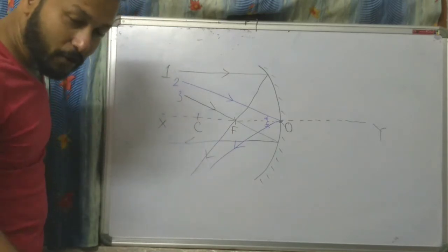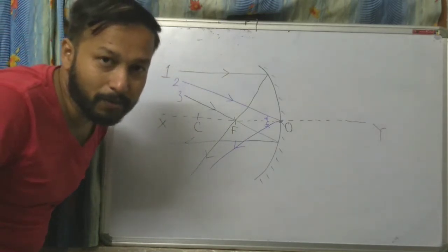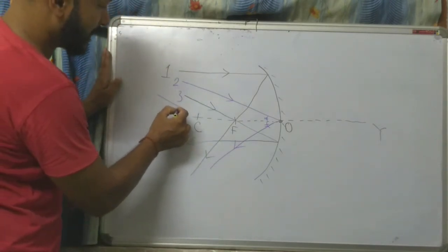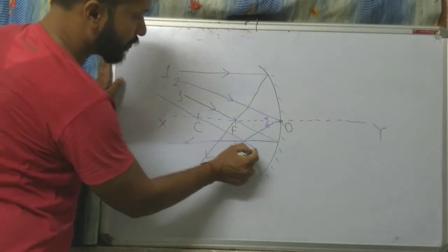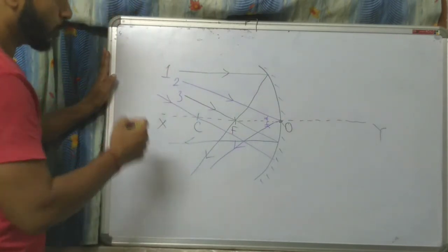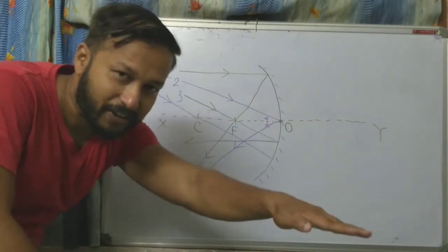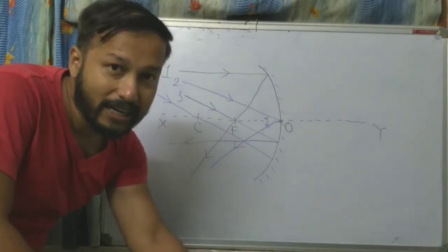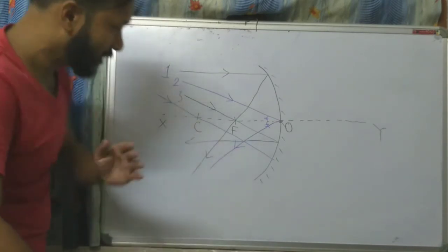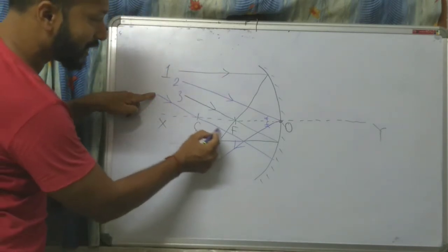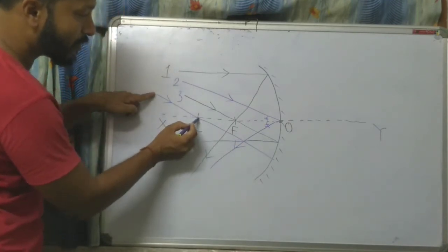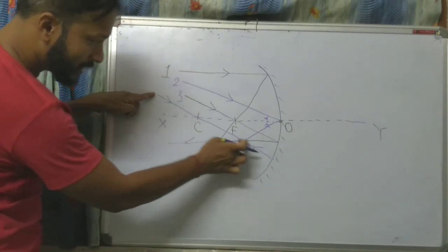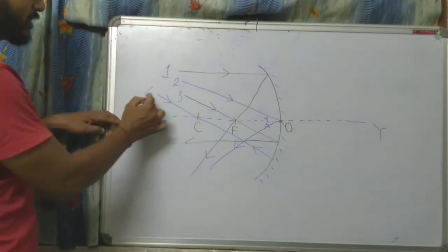Now, if you pass another ray through the center of curvature — I am sending another ray through the center of curvature — you will see that when a ray passes through the center of curvature, after reflecting by the mirror, it gets back from the same path. It is going like this, and after reflecting it comes back from the same point.